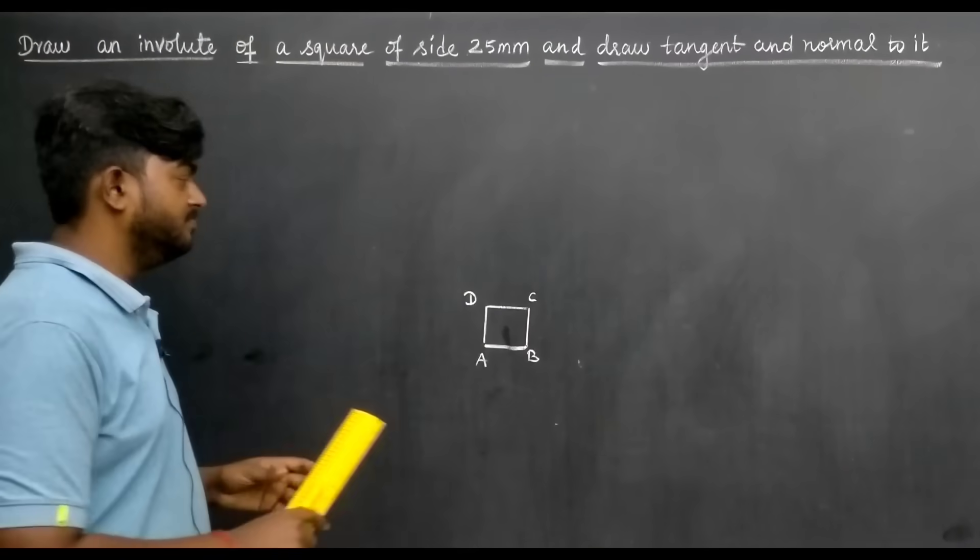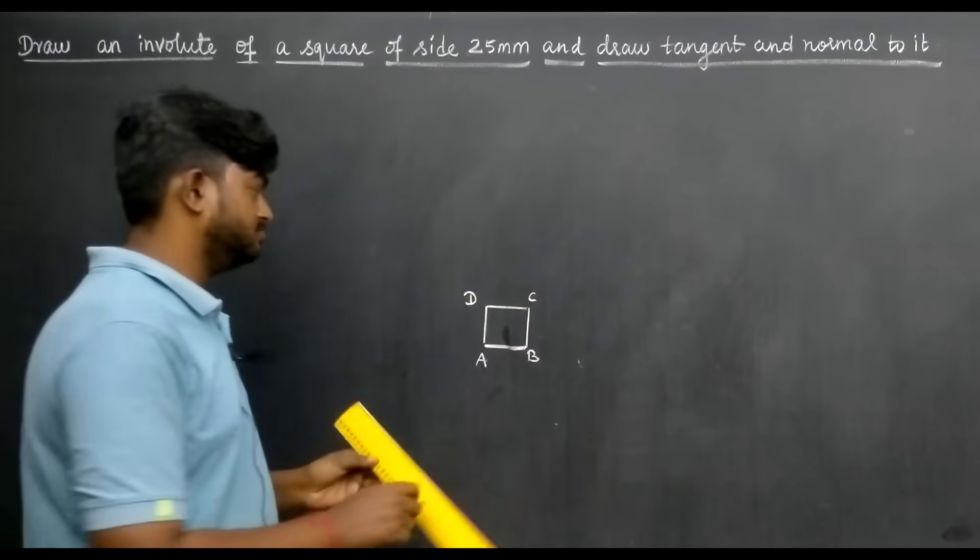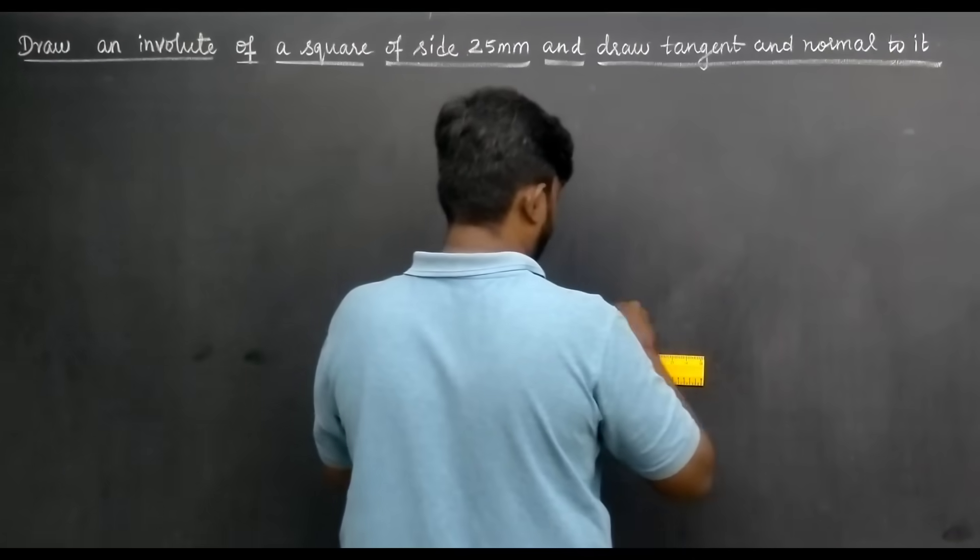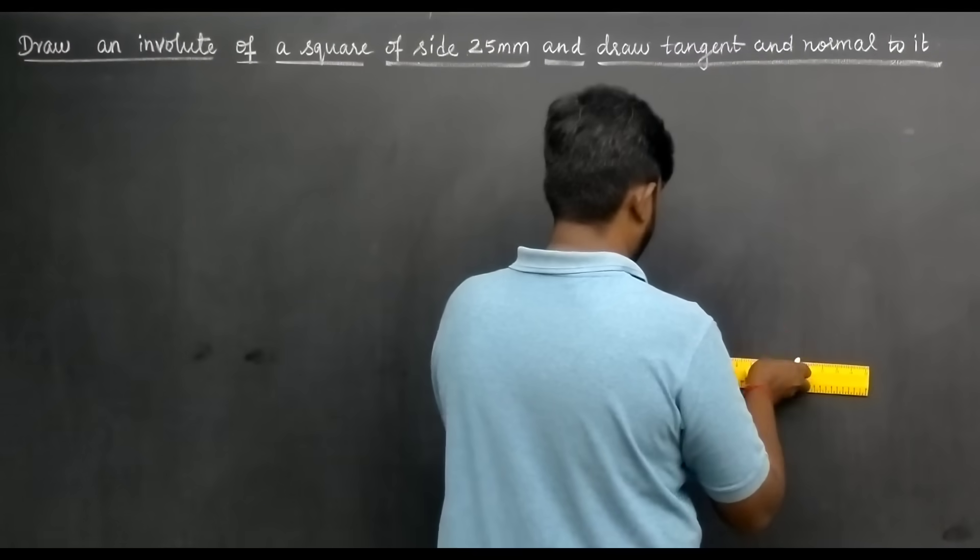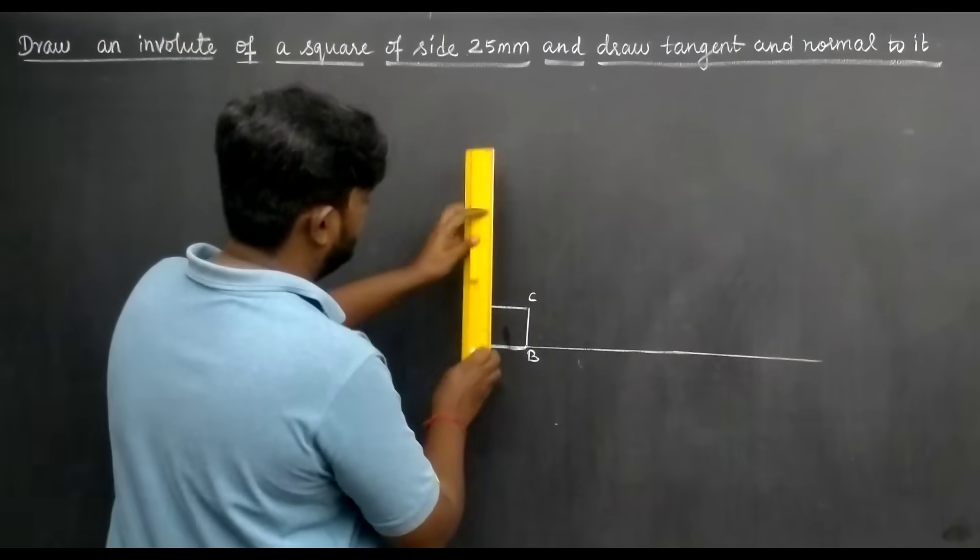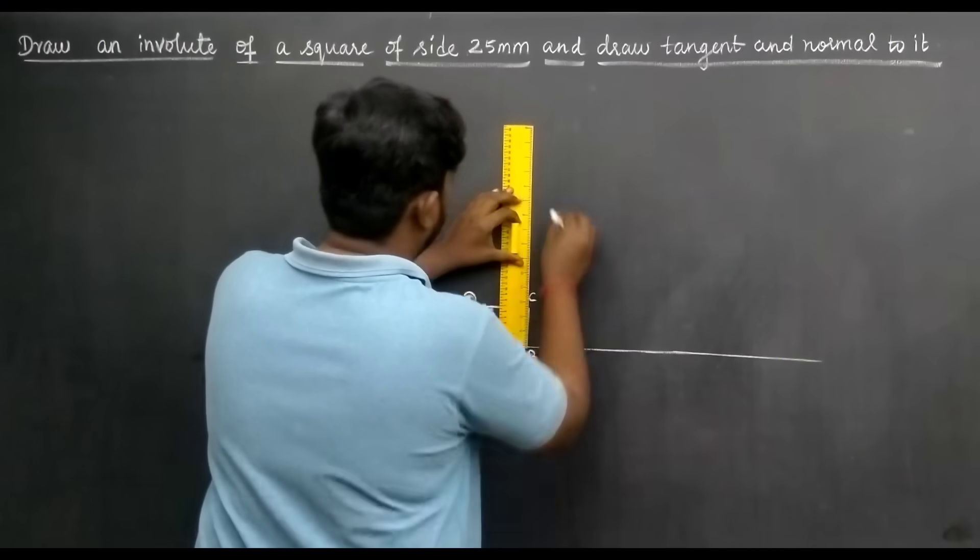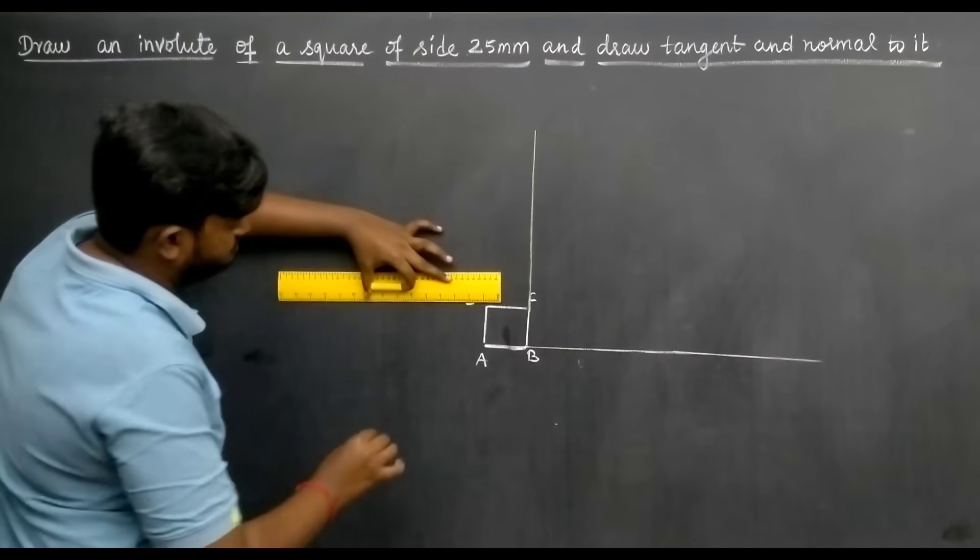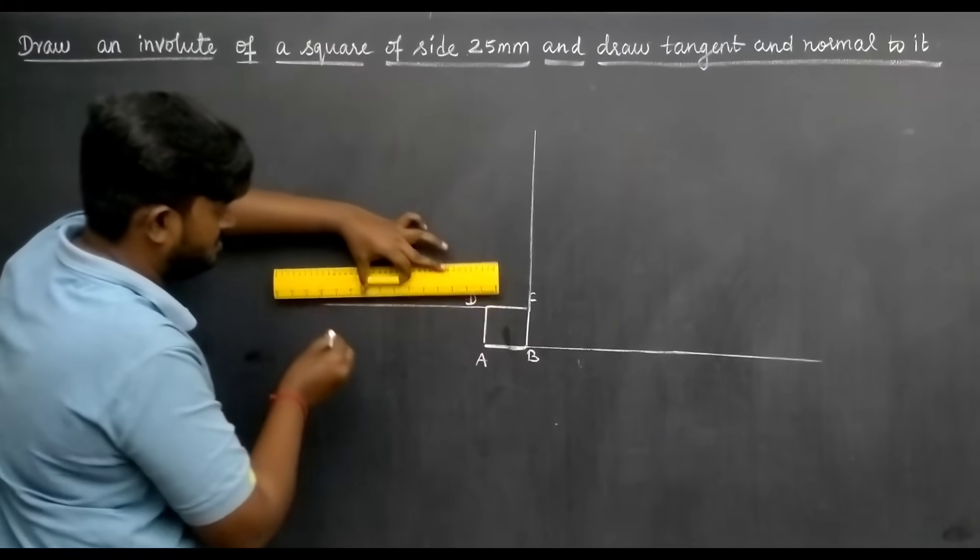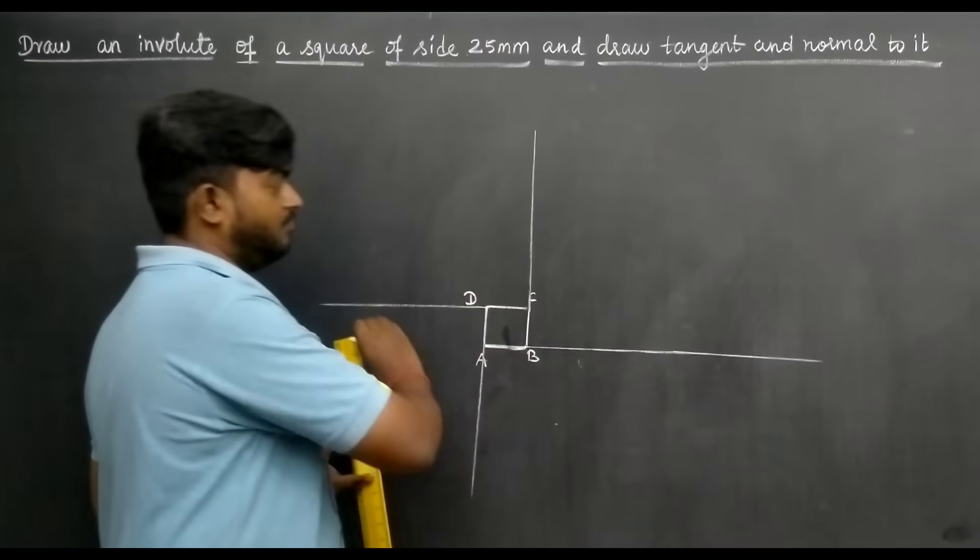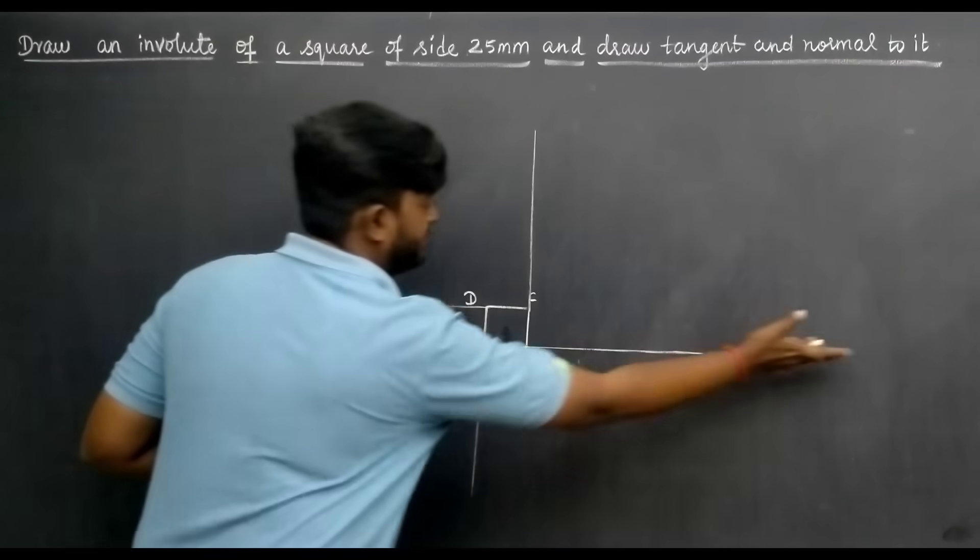Next, we extend one side length. So extend this side, extend this side. Then extend this side also, and this side also. So all four sides of the square are extended.